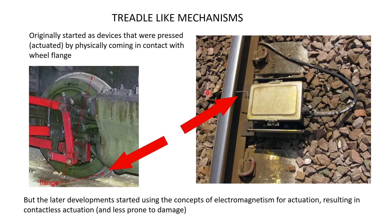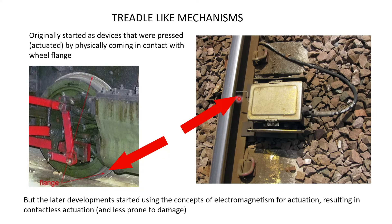Let's look at the history. In the past, axle counters were based on treadle-like mechanisms. This box had a little arm connected to it. As the wheel went over it, the flange would press this arm, which would actuate the electronics inside and register whether the wheel or axle had passed. So the original axle counters required the wheel to physically come into contact for actuation. Later developments — the ones most commonly used today — use the concept of electromagnetism, resulting in contactless actuation, meaning the wheel flange no longer has to make contact with the axle counter.